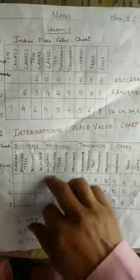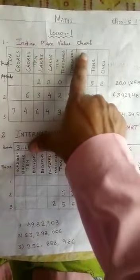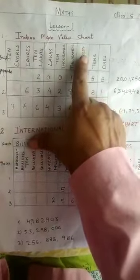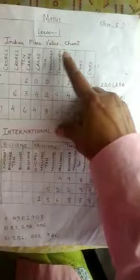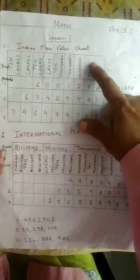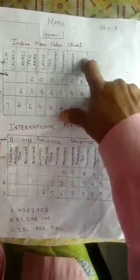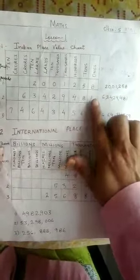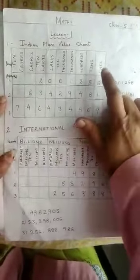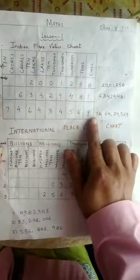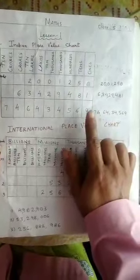So first I am starting with the Indian place value chart. In the Indian place value chart, the chart is divided into two parts — one part is known as periods and the other part is known as place. We have to start from the right hand side.